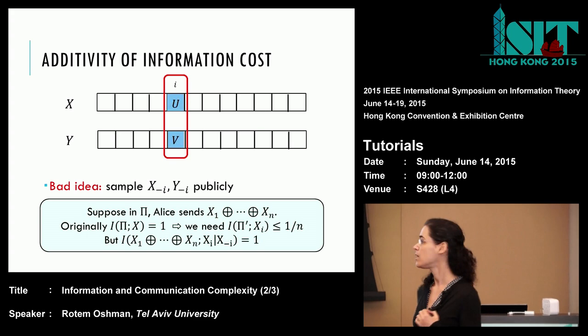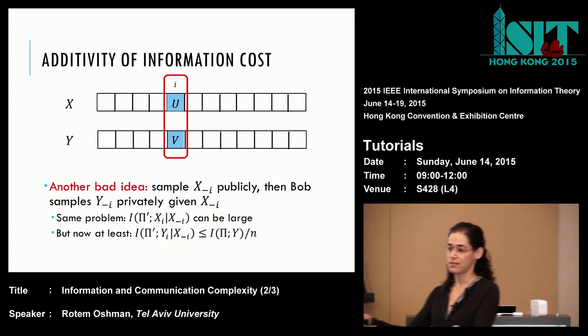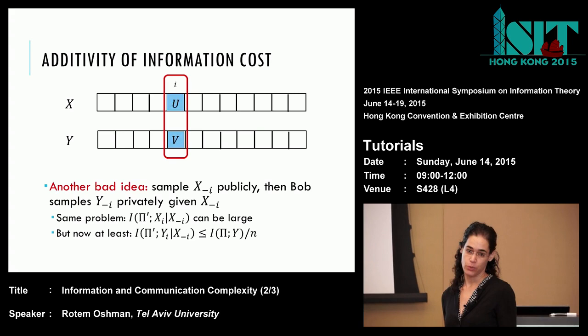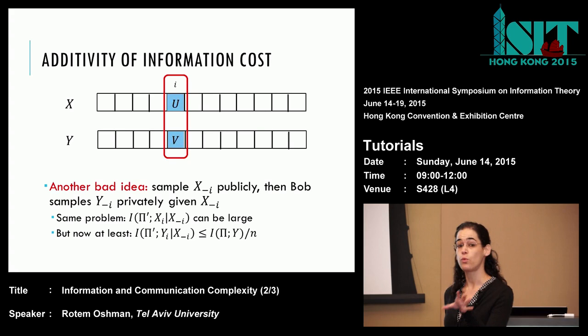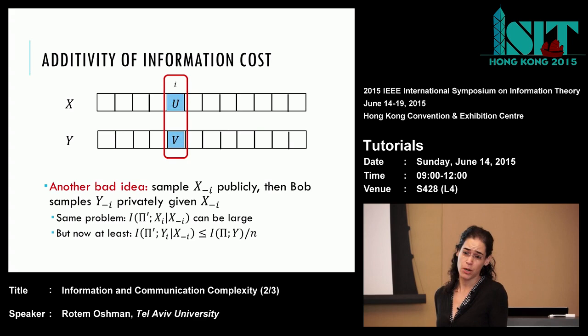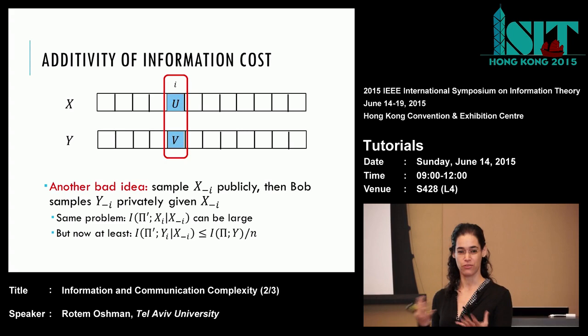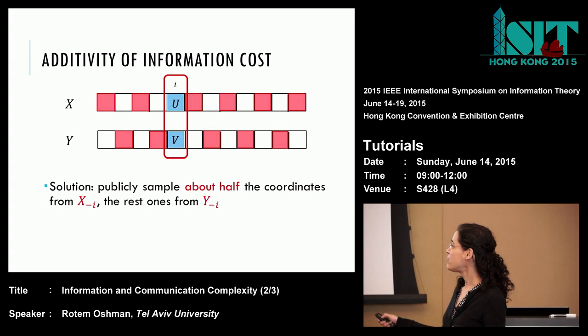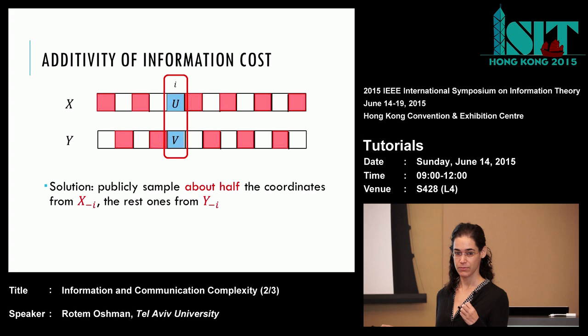Obviously we need to be hiding parts of the input, which is why private randomness is important. Why not sample all of x publicly, and then Bob can sample y privately? We still get the same problem for x, though we've made progress for y — you can prove we're not revealing too much information about y when it's sampled privately. We could do it the other way around — sample y publicly and x privately — but then we're just switching things around. The solution: mix both approaches, do half and half.